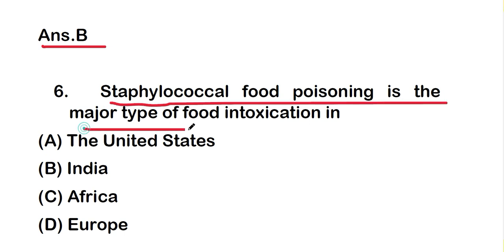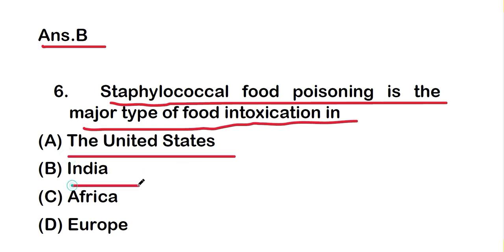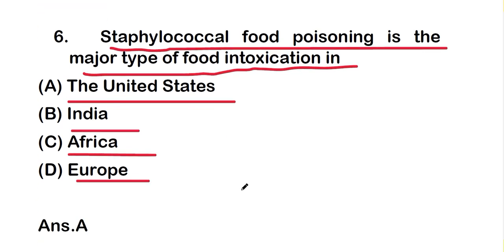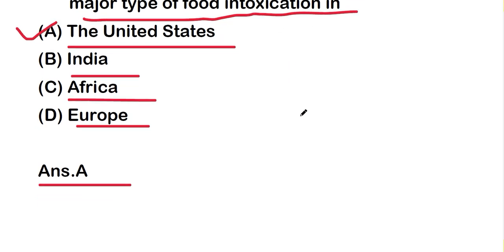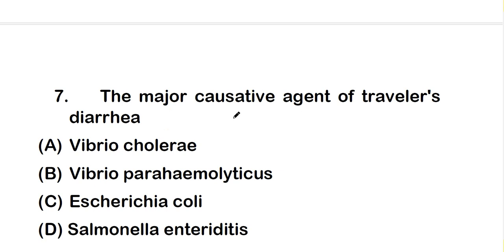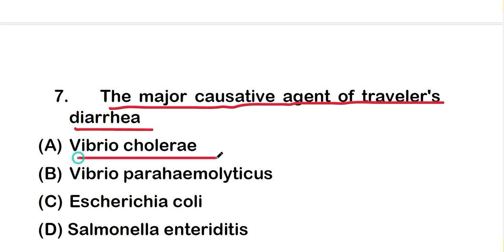Staphylococcal food poisoning is the major type of food intoxication in the United States. The right answer is option A — the United States — so staphylococcal food poisoning is the major type of food intoxication in the United States.